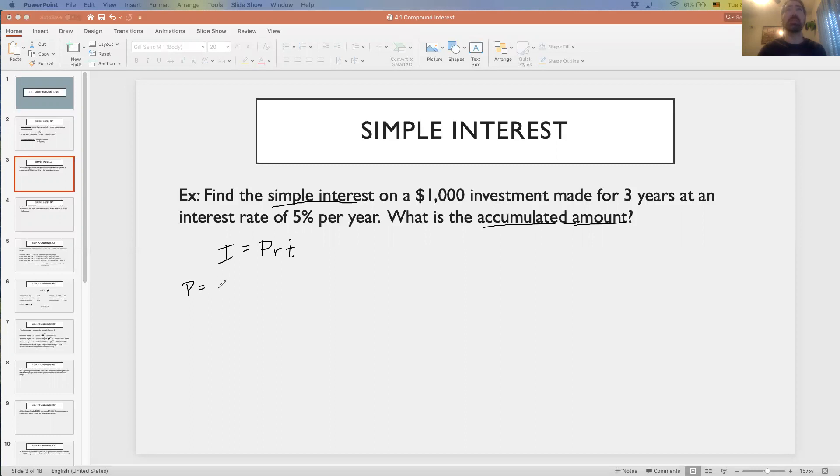The P, that's the principle - how much we invested, the $1,000. The rate is how much the bank is paying us, the interest rate. That's 5% per year. We need to write that rate as a decimal when working with this in the formula, that's 0.05. To convert 5% to a decimal, we move the decimal to the right two spaces, or you can think of dividing 5% by 100. The time in years is three years.